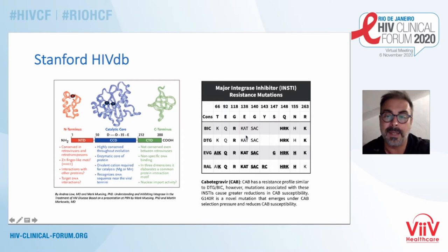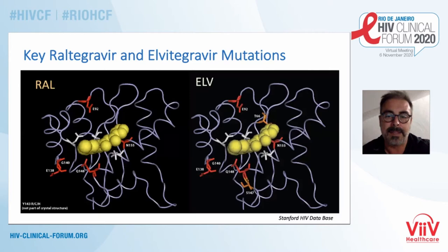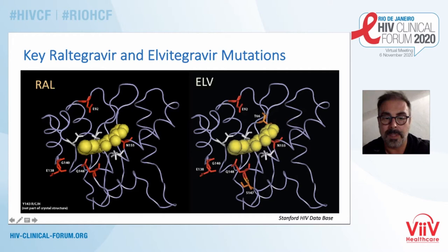In this three-dimensional representation of the integrase catalytic site, you can see on the left how raltegravir binds to the catalytic site, and on the right how a second molecule binds. The two molecules are very similar, and highlighted in yellow are the main resistance mutation sites involved in INSTI resistance, namely N155, Q148, G140, E92, and also Y143, which is another very important site. Both drugs bind very closely to these resistance sites.